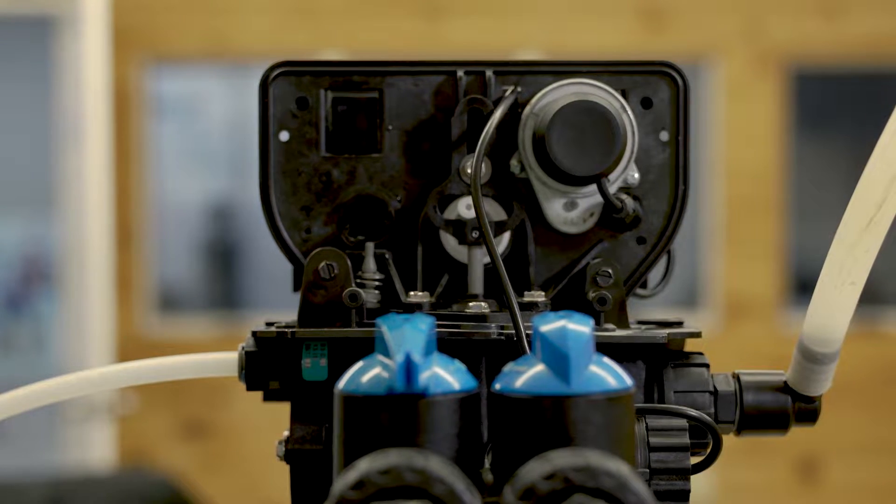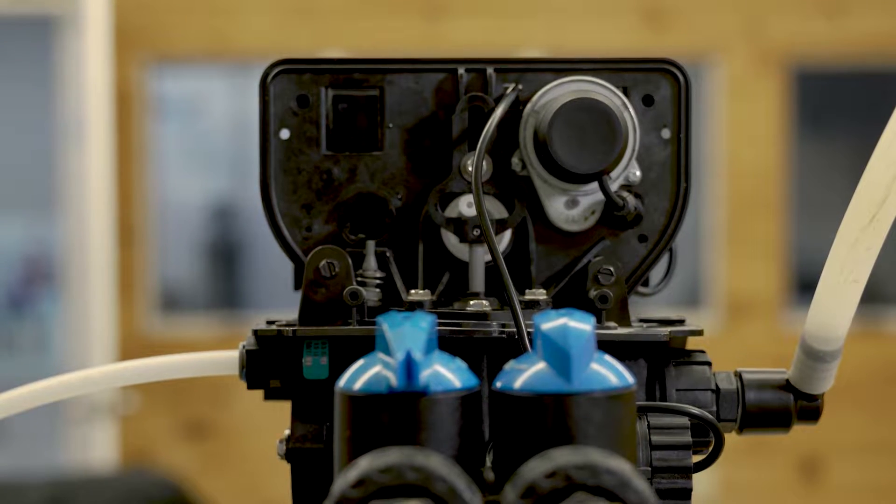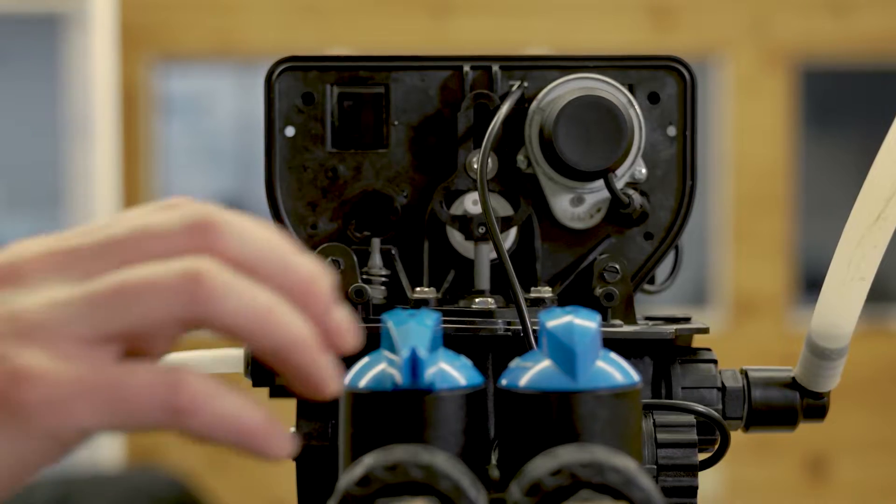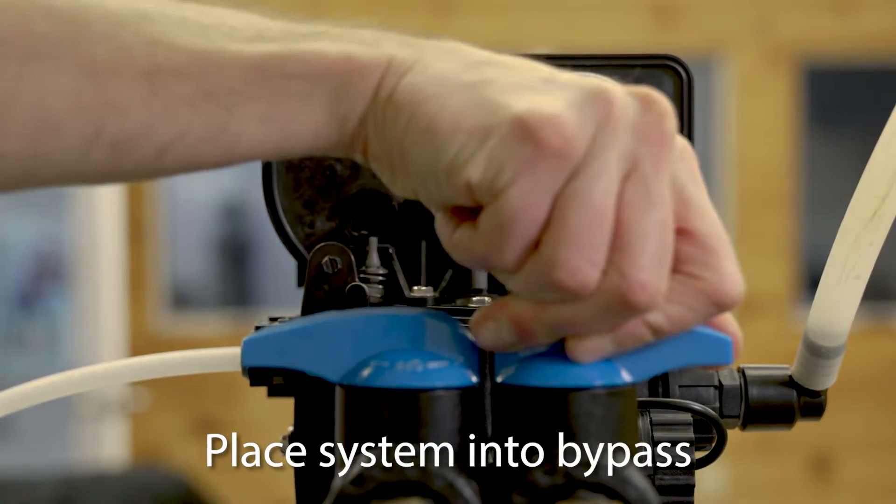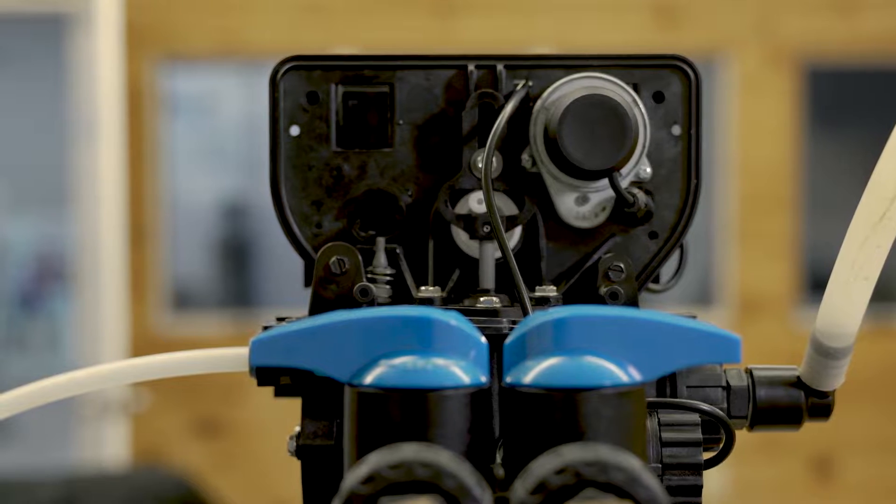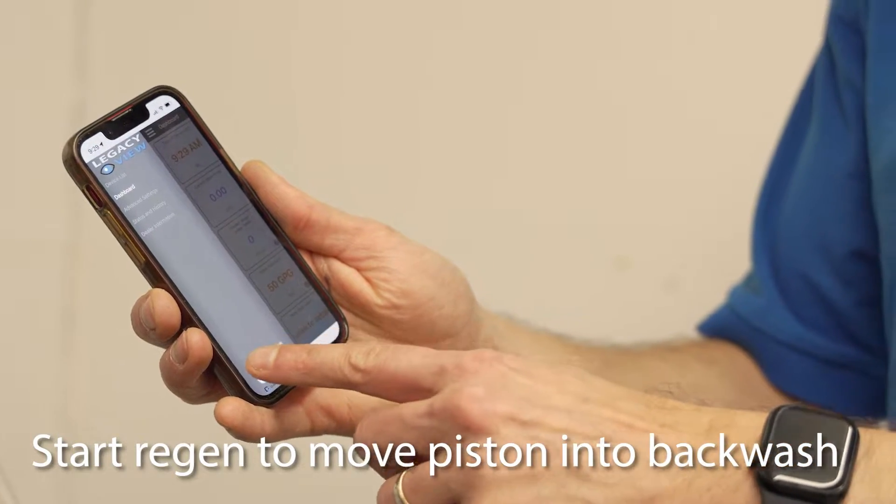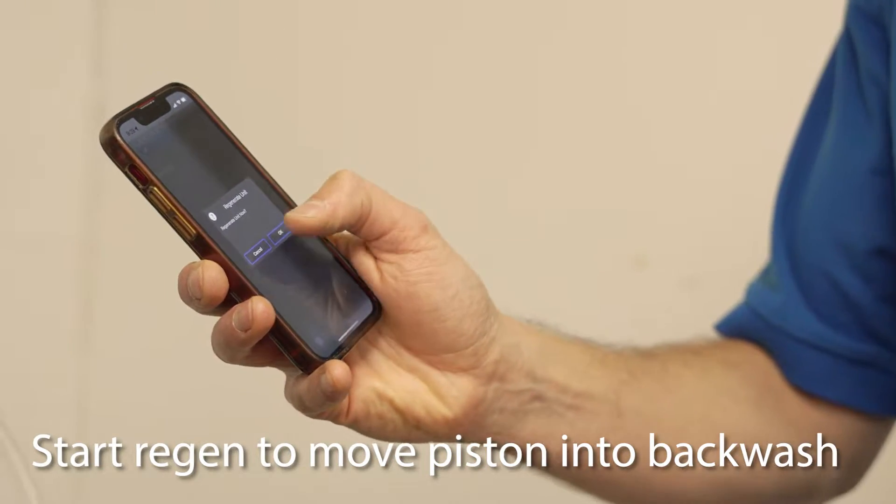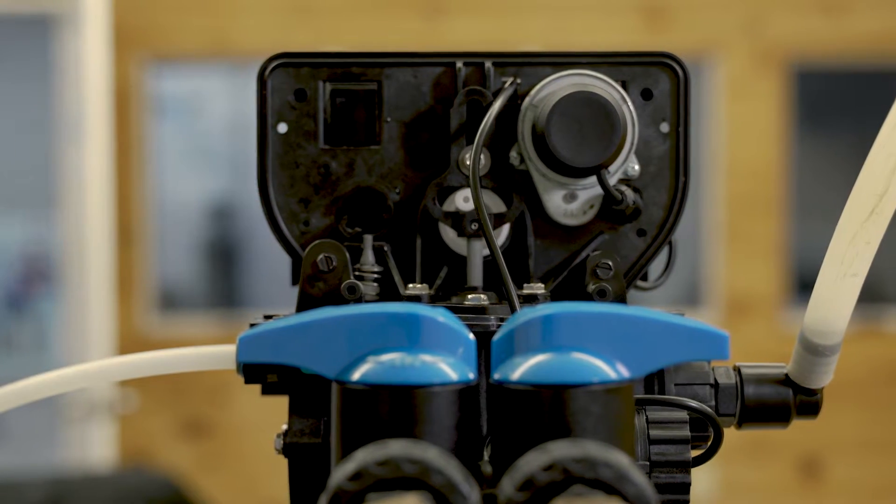Before taking anything apart, we want to take pressure off the system. You can do this by putting it into bypass and then cycling it to backwash by pressing regenerate now in the legacy view app or pressing and holding the set change button on the front of the valve.